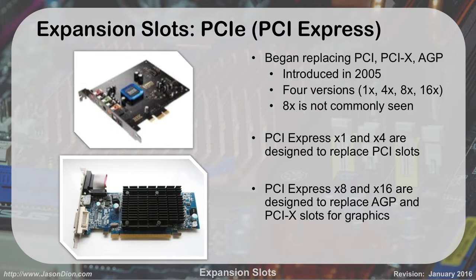PCIe 1X and 4X are designed to replace PCI slots, used for things like modems, network cards, USB expansion slots, and input-output devices. The 16X was pretty much designed to replace AGP — it's made for graphics, very fast, has a lot of throughput, and can do a lot of work when you're talking graphics.